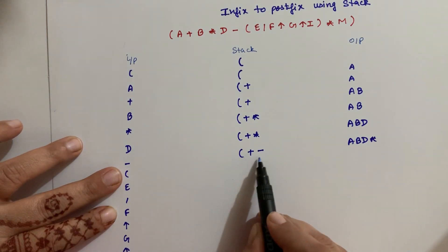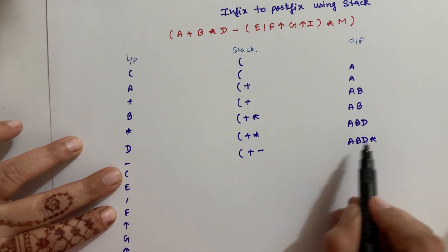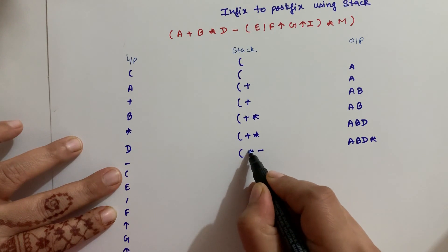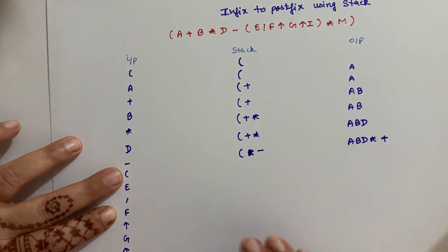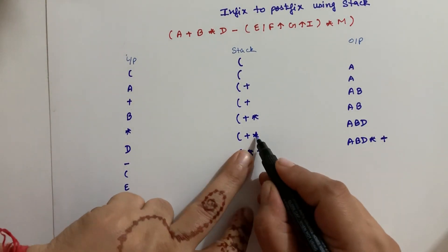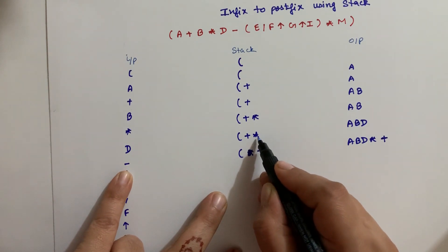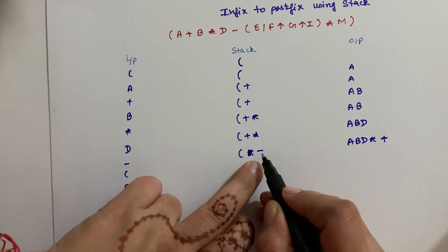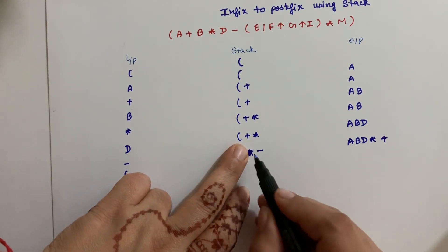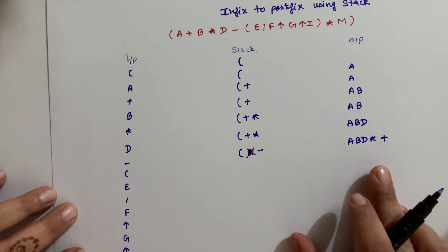When the priorities are the same, one gets popped out and one remains inside. So when we compared the input operator minus with the top of the stack — it was multiplication — so we popped multiplication out. After that, the top of the stack had plus, and minus's priority is the same as plus, so we also popped plus out, and placed minus at the top of the stack.